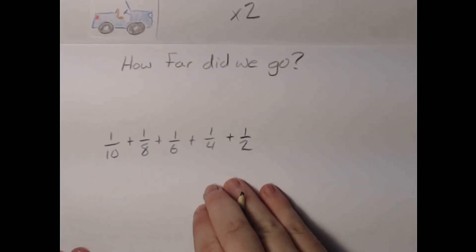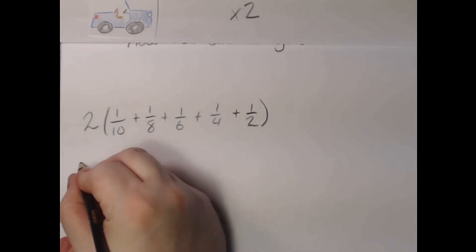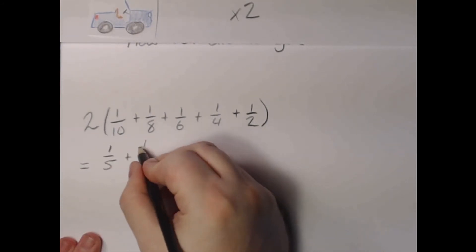This adds up to be one-fifth, one-fourth, one-third, one-half, and one.